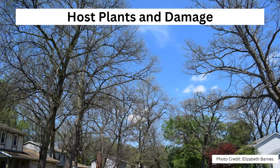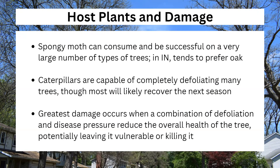Let's talk a little bit about the damage that these insects do. The damage is very easily explained — they just defoliate trees. They eat all the leaves off of them, and the image in front of you right now is a great example of the kind of damage they can do. The Spongy Moth can consume and be successful on several types of trees. In Indiana, it's going to prefer oak. While the caterpillars can completely defoliate a tree, most of those trees will survive to the next season. The big problem is that as that damage keeps happening again and again over two or three seasons, the tree's overall health is going to be reduced significantly. The constant damage is going to leave openings for disease to come in and eventually kill the tree. So even though Spongy Moth itself may not directly kill most trees, they're going to be the inevitable murderer, so to speak.